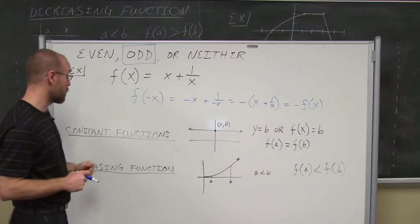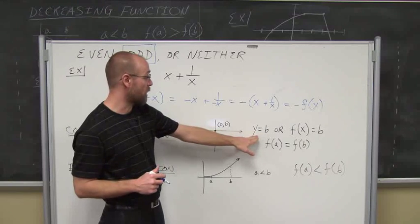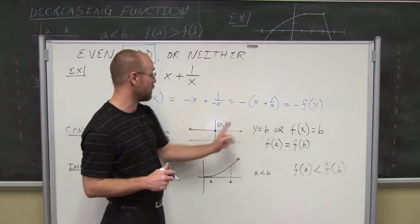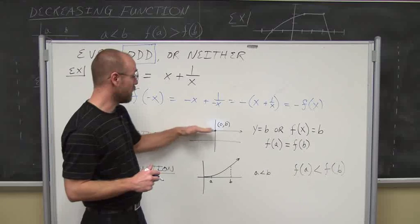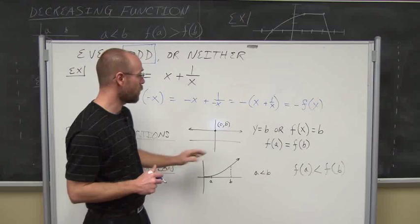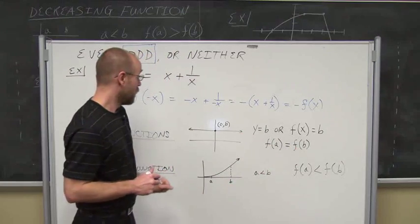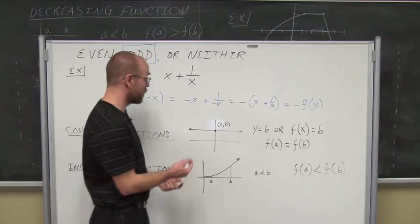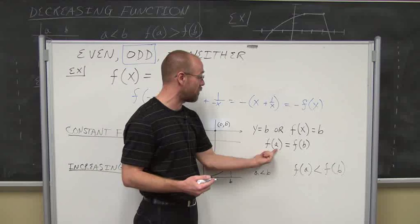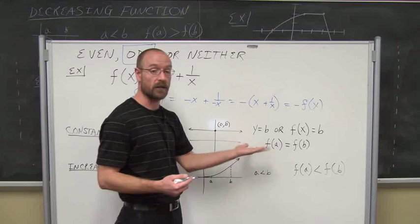Let's look at some different types of functions. One is the constant function, essentially the equation of a horizontal line — y equals some number b. It doesn't increase or decrease; it stays constant. We can also write that in function notation where the function equals a constant. This means over any interval from a to b, for any value of x, the output is always the same.